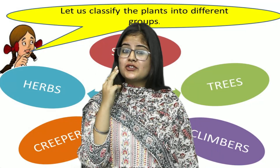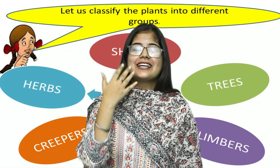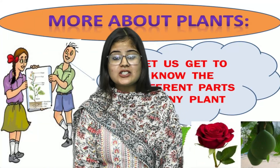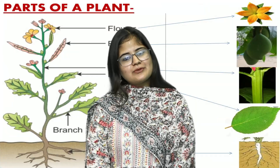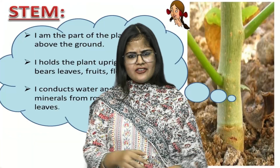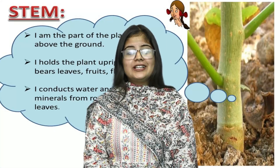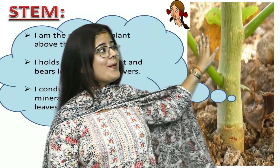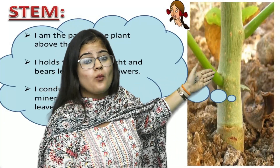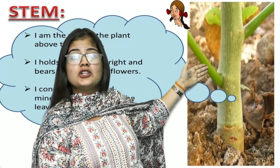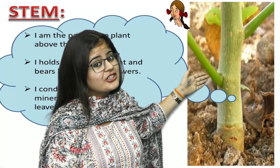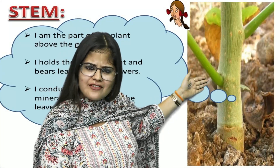Now we are moving on to the parts of the plant. The very first part is the stem. The functions of the stem are: it holds the plant upright, and it conducts water and minerals to the different parts of the plant. There are many more functions of the stem.